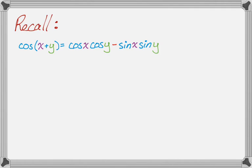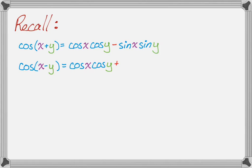Similarly, cosine of x minus y — there's a minus in the argument, so when we get to the formula there's a plus between the terms: cosine x cosine y plus sine x sine y. So that's the two cosine formulas.